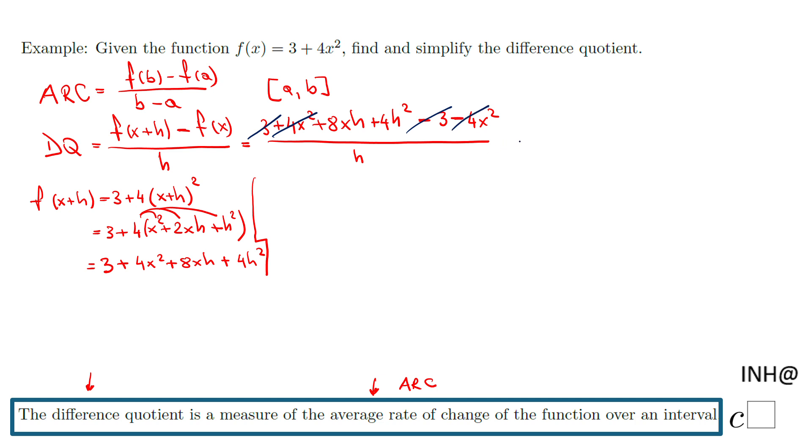So now we have left 8xh plus 4h squared over h. We can factor out an h and we have 8x plus 4h. Another thing that will cancel out, hopefully you already noticed, is this h.